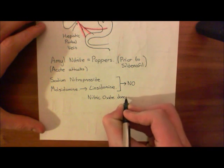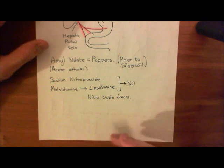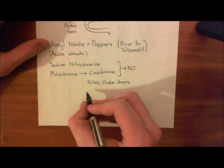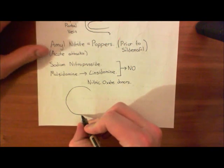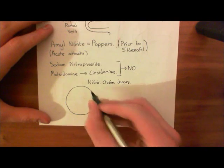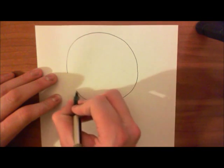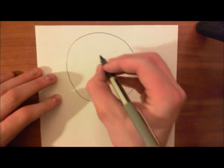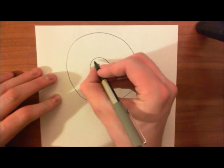We know what nitric oxide does — it's the endothelium-derived relaxation factor. So let's draw a picture of the general structure of a blood vessel. The innermost layer of a blood vessel is, as we know, the endothelial cells. Here's our blood vessel.